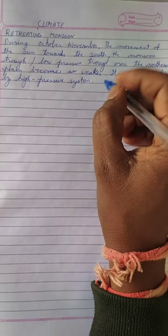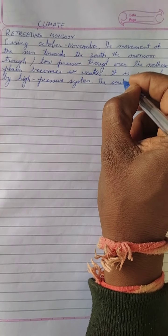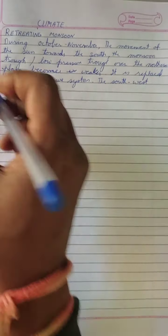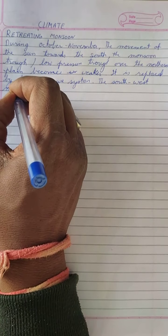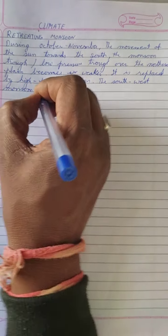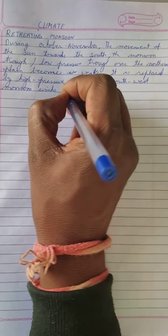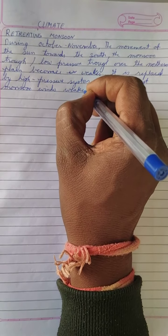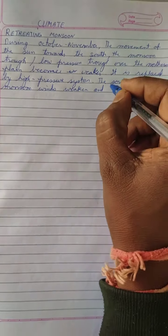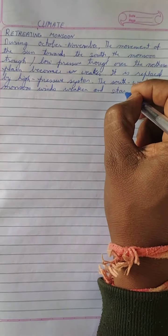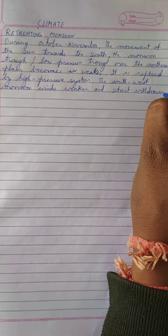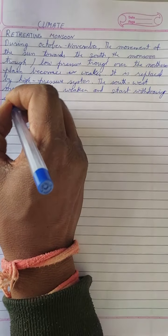The south-west monsoon winds weaken and start withdrawing, gradually moving towards the north, and the monsoon is withdrawn.